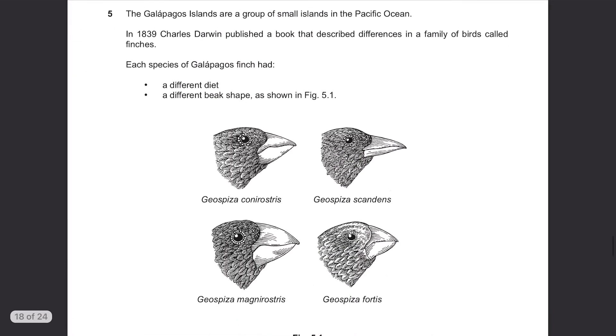Question 5. The Galapagos Islands are a group of small islands in the Pacific Ocean. In 1839, Charles Darwin published a book that described differences in a family of birds called finches. Each species of Galapagos finch had a different diet, a different beak shape as shown in figure 5.1.